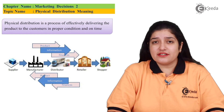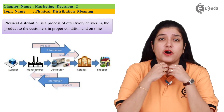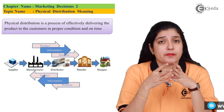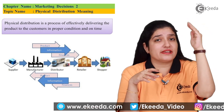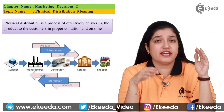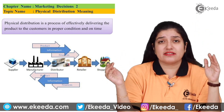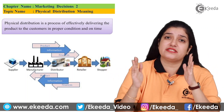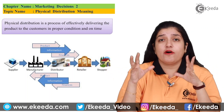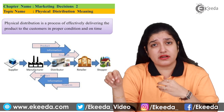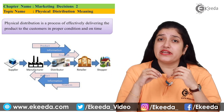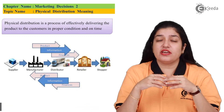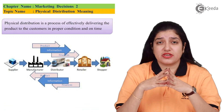We will discuss what is Physical Distribution. It is a very simple concept. Physical Distribution is when the product is prepared and the customer needs it — it has to go through the channel and finally reach the customer at the right cost, in the right condition, and at the right time. This is called Physical Distribution.